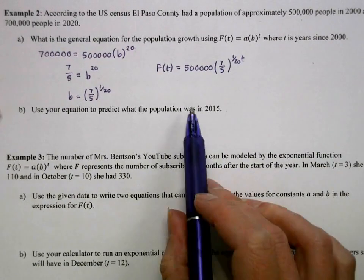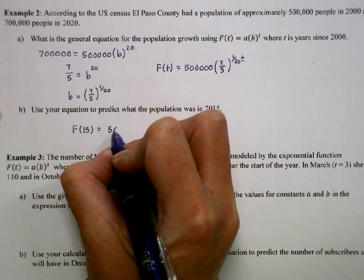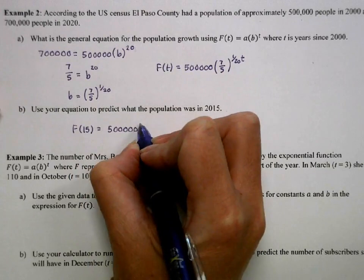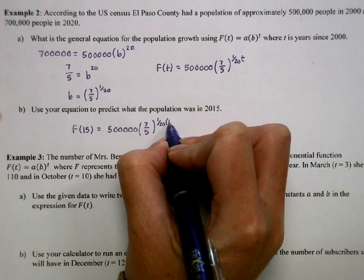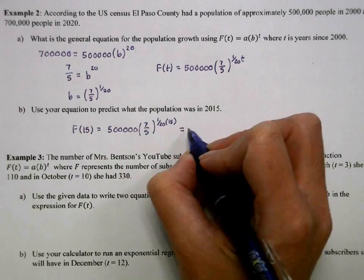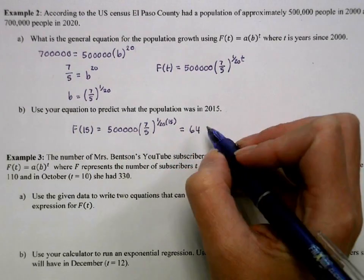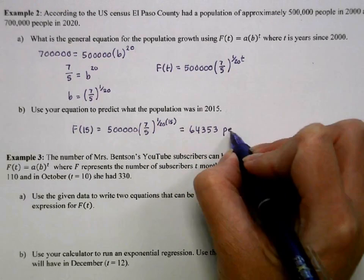Then we'll use that to predict the population in 2015. So we'll simply plug 15 into our equation. Again, using the calculator to get our population of 643,353, and we'll just round to the nearest whole number.